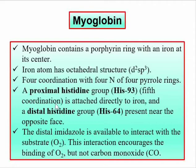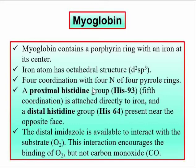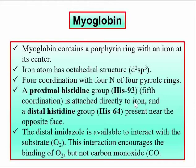The iron center in myoglobin is in the Fe2+ state with an octahedral structure and d2sp3 hybridization in the oxy and met forms. Four coordinations come from the four nitrogens of the pyrrole rings. The fifth coordination is from the proximal histidine, which is histidine 93 — directly attached to the iron center.